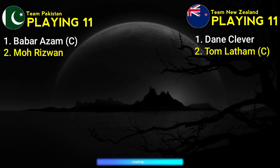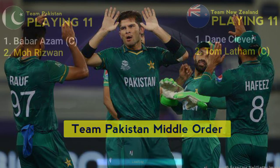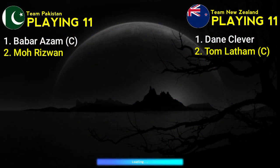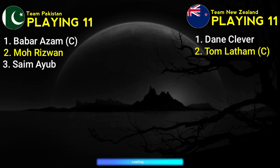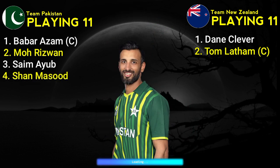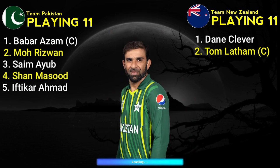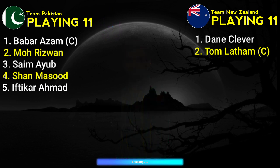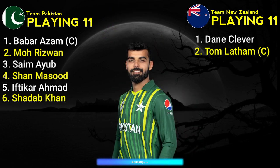Team Pakistan Middle Order: Number 3 Saim Ayub, left-hand batsman. Number 4 Shan Masood, right-hand batsman. Number 5 Iftikhar Ahmed, right-hand batsman. Number 6 Shadab Khan, right-hand all-rounder.